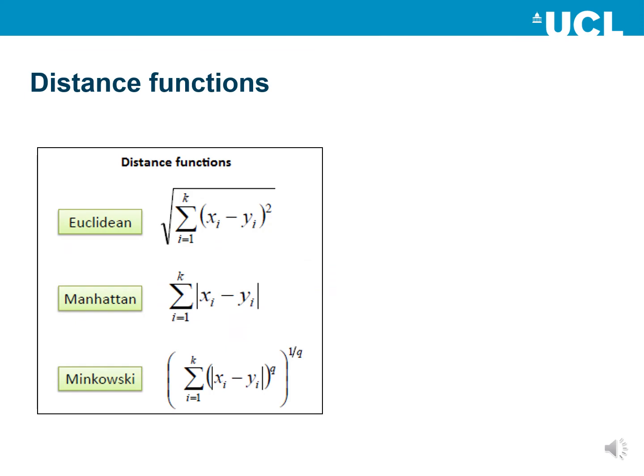The different distance functions include the Euclidean distance, the Manhattan distance, and the Minkowski distance. The Euclidean distance works quite well if your dataset, or feature space, was previously cleaned and normalized or standardized — meaning feature values have been brought to a predefined range so that one feature does not have a superior impact on the whole Euclidean distance.